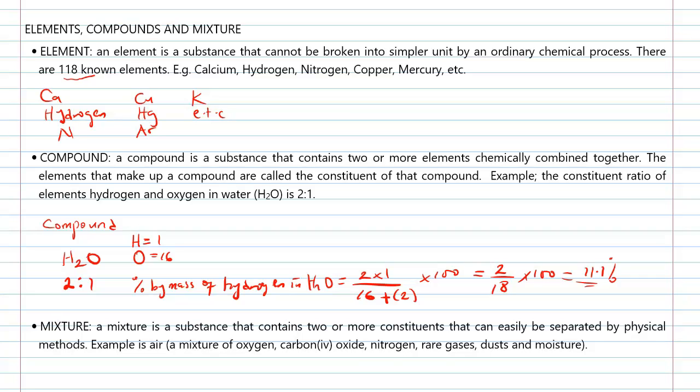A mixture is a substance that contains two or more constituents that are easily separated by physical method. This means that the constituents of a mixture are physically combined. Example of a mixture is air, which contains oxygen, carbon dioxide, nitrogen, rare gases, dust and moisture.